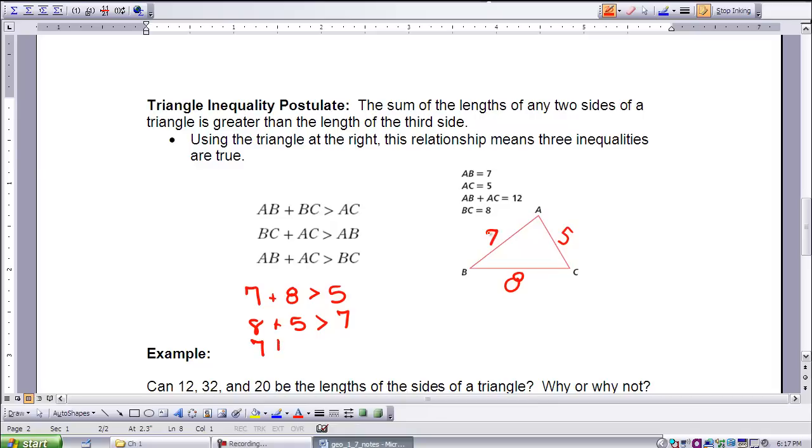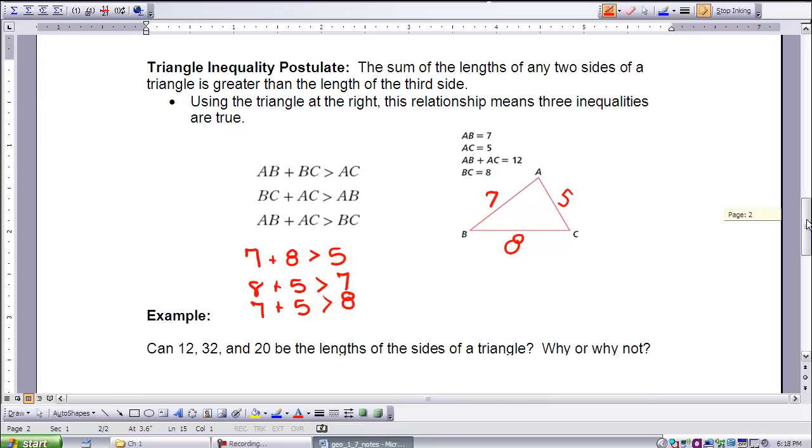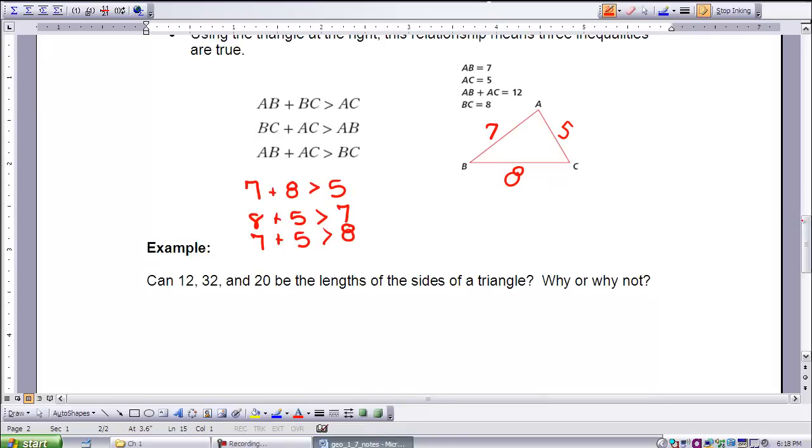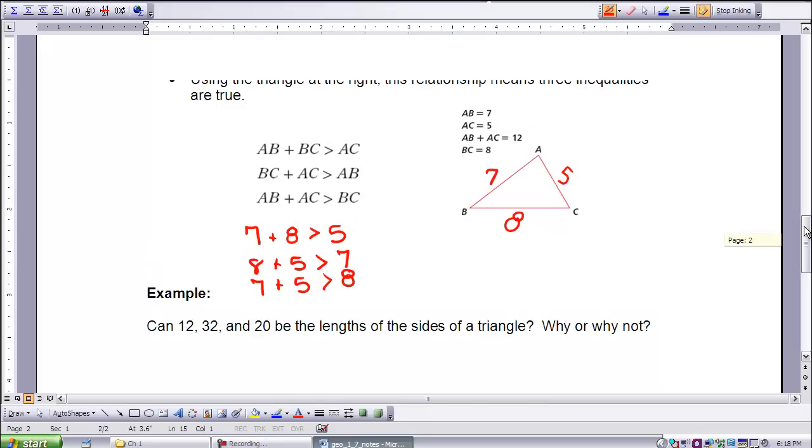AB is 7 plus AC is 5, is that greater than our BC, which is 8? Yes. So those three values for the sides of this triangle do work with our Triangle Inequality Postulate.